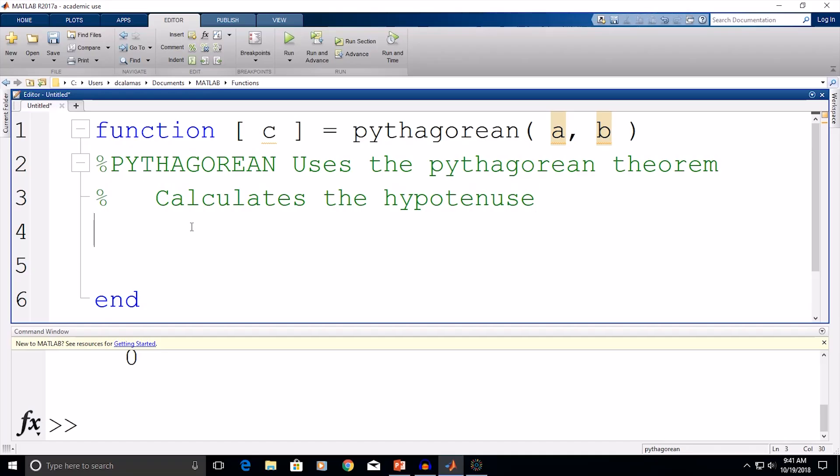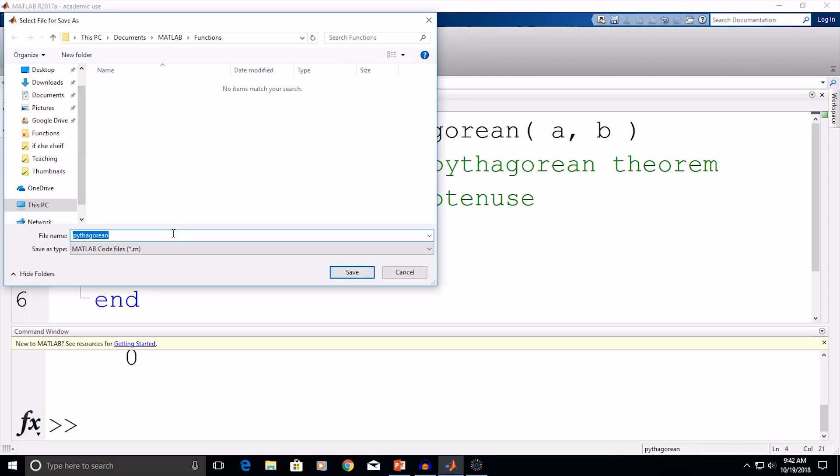So next we're going to calculate the hypotenuse based on the Pythagorean theorem. So our hypotenuse C is equal to the square root of A squared plus B squared. Now I'm going to add a semicolon at the end of this line to suppress the output. And we'll go ahead and save this file. And you'll notice when you click save that the function name automatically fills in, so I'm good to go here. I'll just click save again.